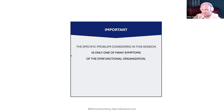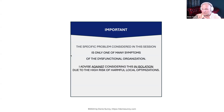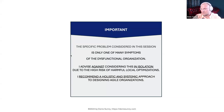Important to note: the reciprocal interdependencies we're discussing today are just one symptom of numerous deeply rooted dysfunctions in organizations. I advise against considering this topic in isolation. What I really suggest is a holistic and systemic approach to designing agile organizations.